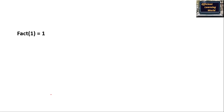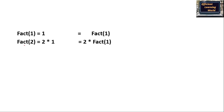For example, factorial of 1: if I represent it in function form, like a user-defined function in C, C++, or Python, I can write fact(n) where n is the value for which I want to find the factorial. So fact(1) = 1. For factorial of 2, I pass 2 into this function: 2 × 1. I can represent this as 2 × fact(1), since factorial of 1 is 1.